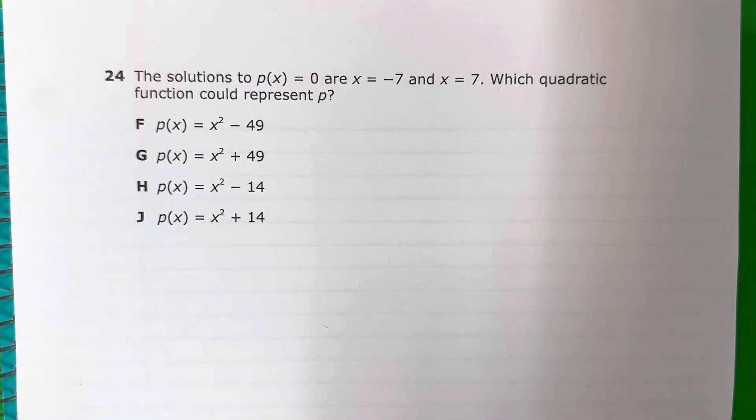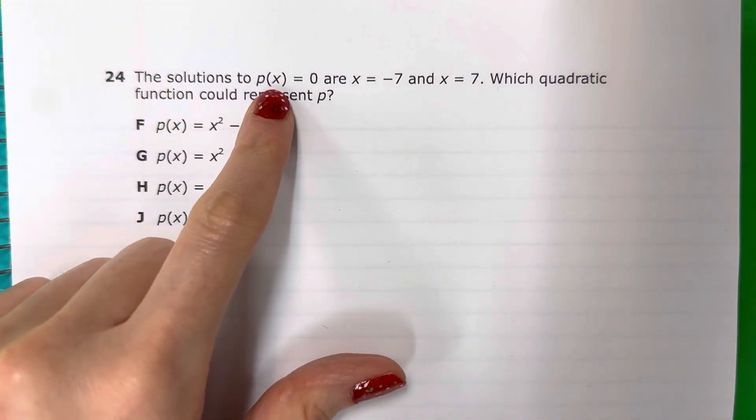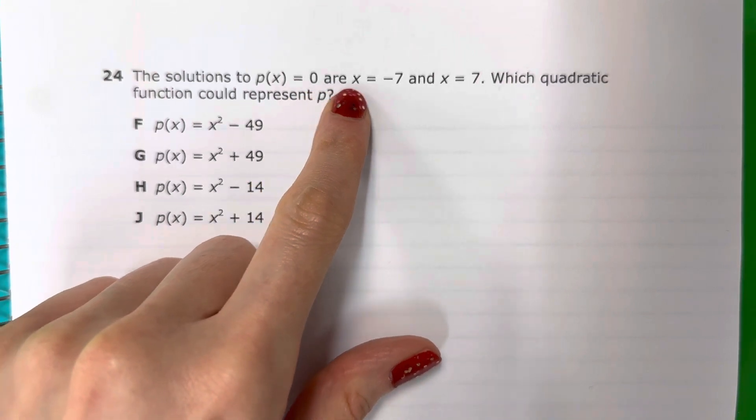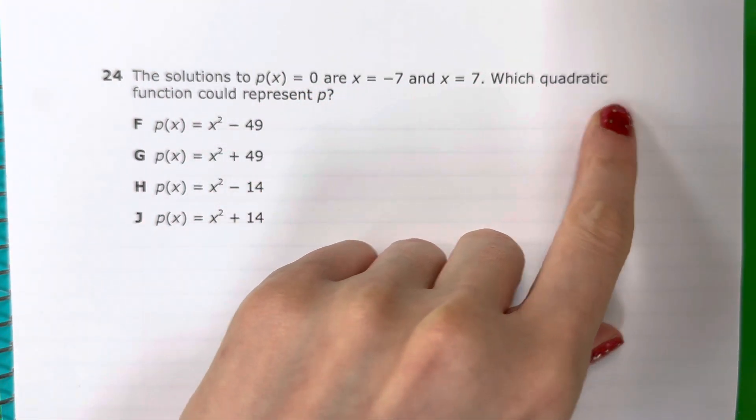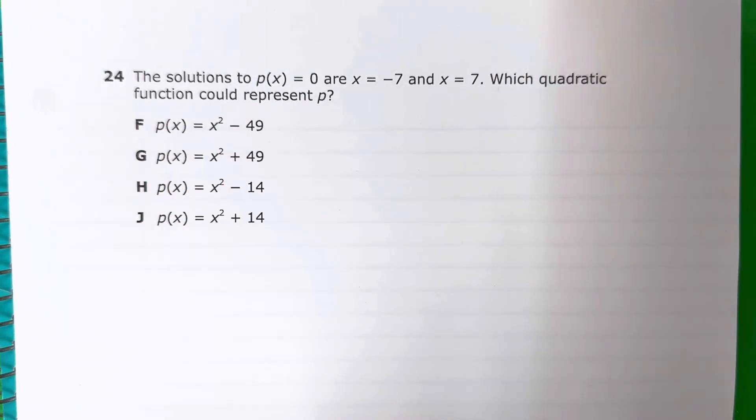Question 24. The solutions to p(x) = 0 are x = -7 and x = 7. Which quadratic function could represent p?